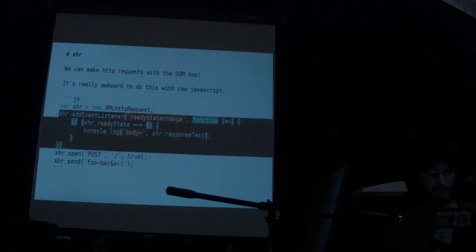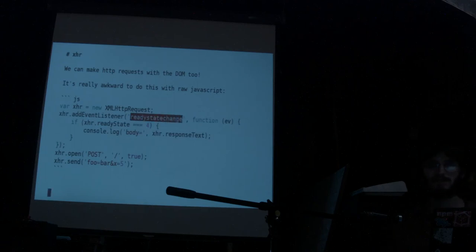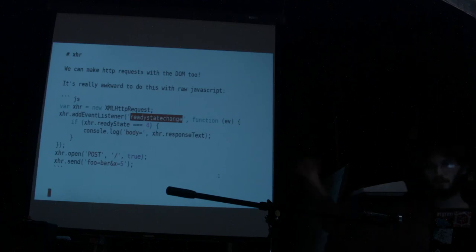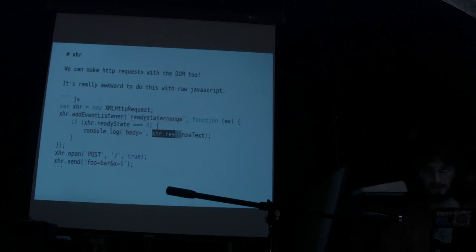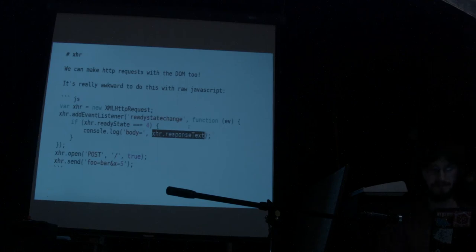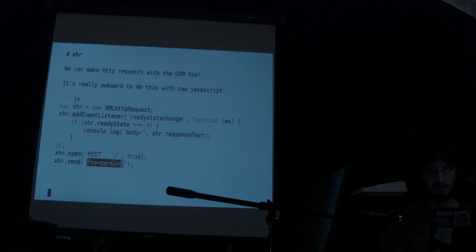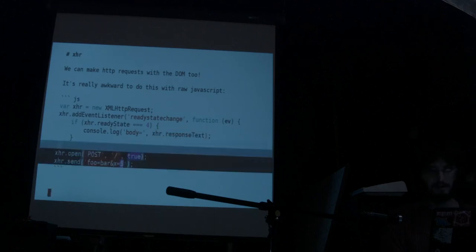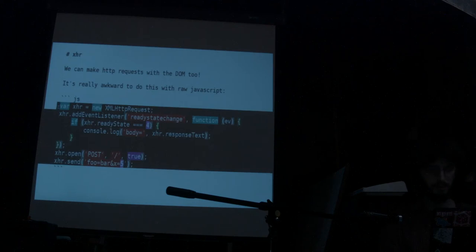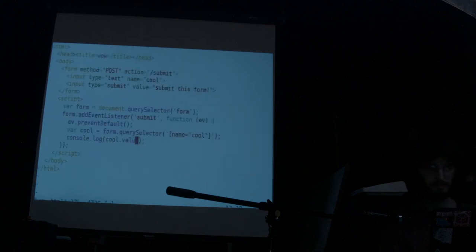You have to listen to this readyState, and there's a bunch of ready states that happen — like when the server connects and when there's a new chunk of data. But when everything is finished, you can do xhr.responseText to get the text of the body of the HTTP response. So we can send a POST with some parameters. I can whip this up pretty quickly — this example requires running a server.